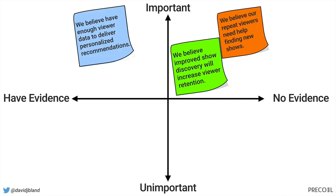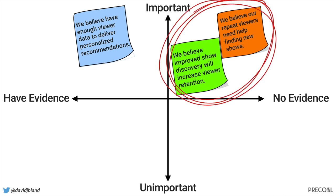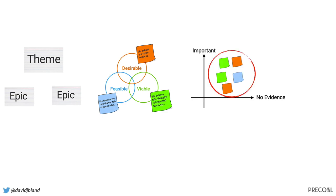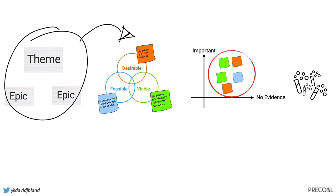Some things could be an issue, and some things — like we think we can actually build this — might not be the most important thing to experiment on. I try to stay with experiments focused on the really important things with no evidence. We still have to make the recommendation engine work, but it might not be the most important thing to experiment on right away — because if people don't want it, it doesn't matter how well it works. So look at your themes and epics, map the assumptions, and go after the most important things with no evidence, then run experiments.